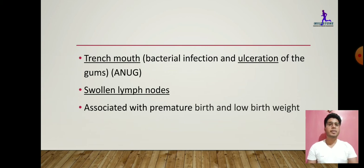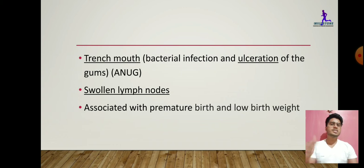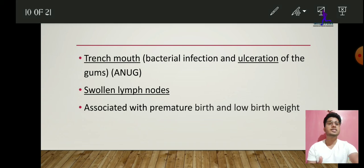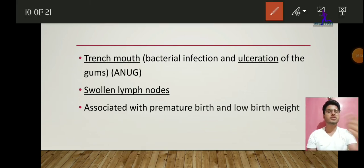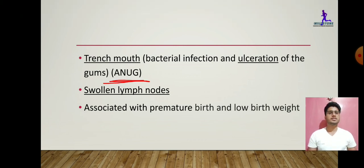An image of periodontitis is shown here. Other complications include trench mouth and swollen lymph nodes, and gingivitis may be associated with premature birth and low birth weight. Trench mouth is also called Acute Necrotizing Ulcerative Gingivitis — ANUG. While gingivitis is generally non-destructive, in ANUG there can be a destructive process.